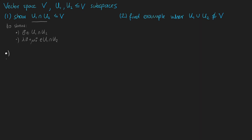The first condition is rather easy to verify because we know that u1 and u2 are subspaces, and that is why we definitely know that the zero vector is included in u1 and also in u2. Because they are included in both of them, they are also included in the intersection of u1 and u2.